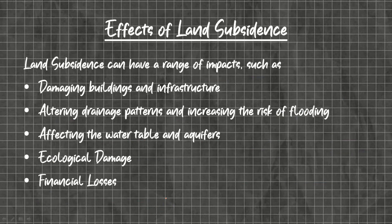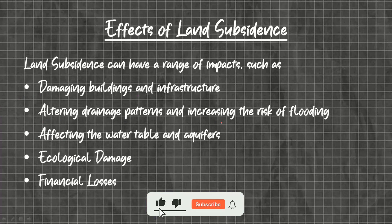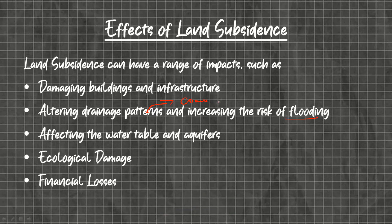Coming to the effects of land subsidence, land subsidence can have a range of impacts such as damaging buildings and infrastructure, altering drainage patterns, and increasing the risk of flooding — meaning it will alter the course of river water. This can increase the risk of flooding, affecting the water table and aquifer — that means groundwater levels — causing ecological damage to nearby ecosystems, and financial loss due to damaged agriculture and infrastructure.